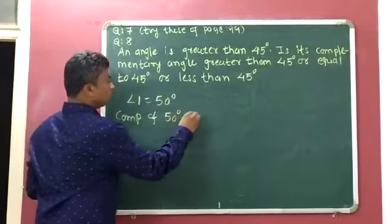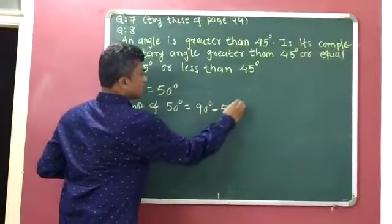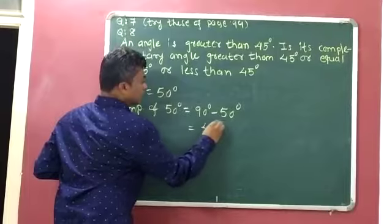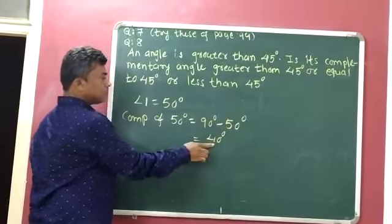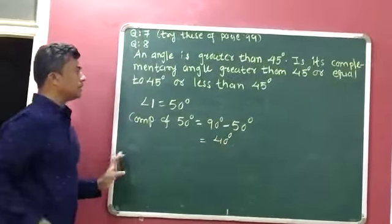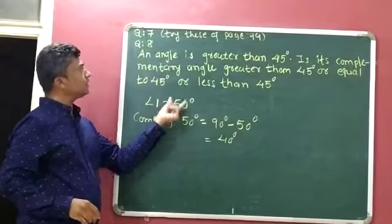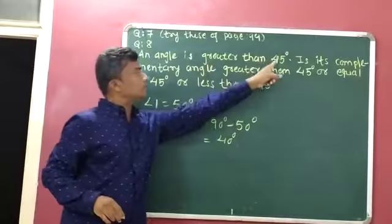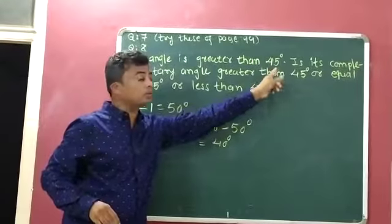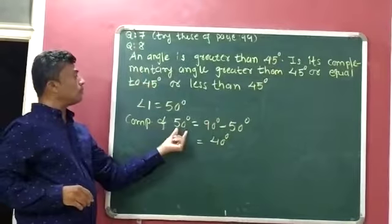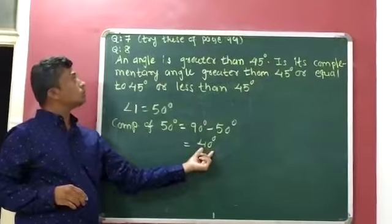Complement of 50 degrees is equal to 90 degrees minus 50 degrees, which is 40 degrees. We considered angle 1 as 50 degrees, which is greater than 45 degrees, and its complement is 40 degrees.